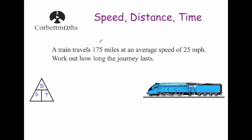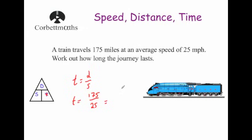A train travels 175 miles at an average speed of 25 miles per hour — work out how long the journey lasts. We want to find time, so T = distance ÷ speed = 175 ÷ 25 = 7 hours. That's how long the journey lasts.